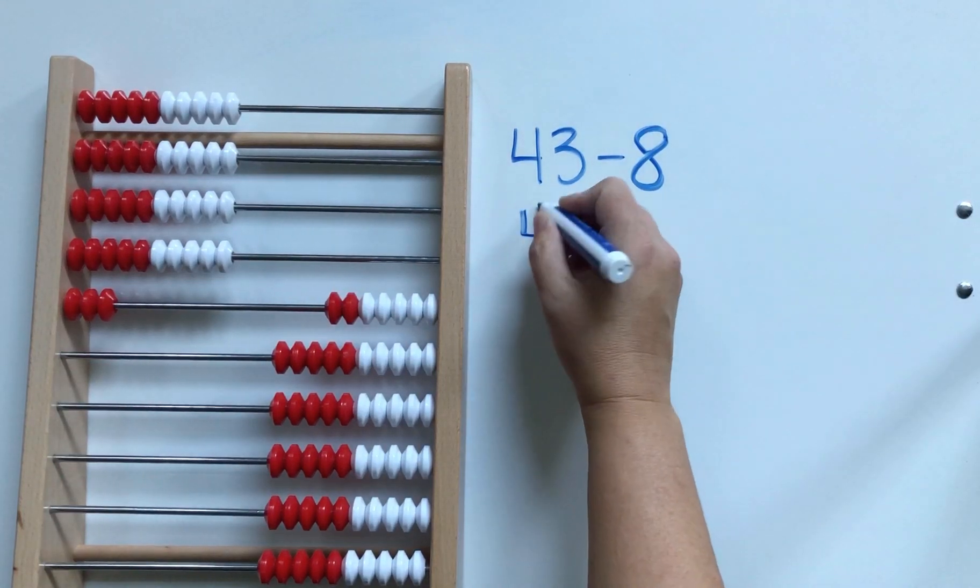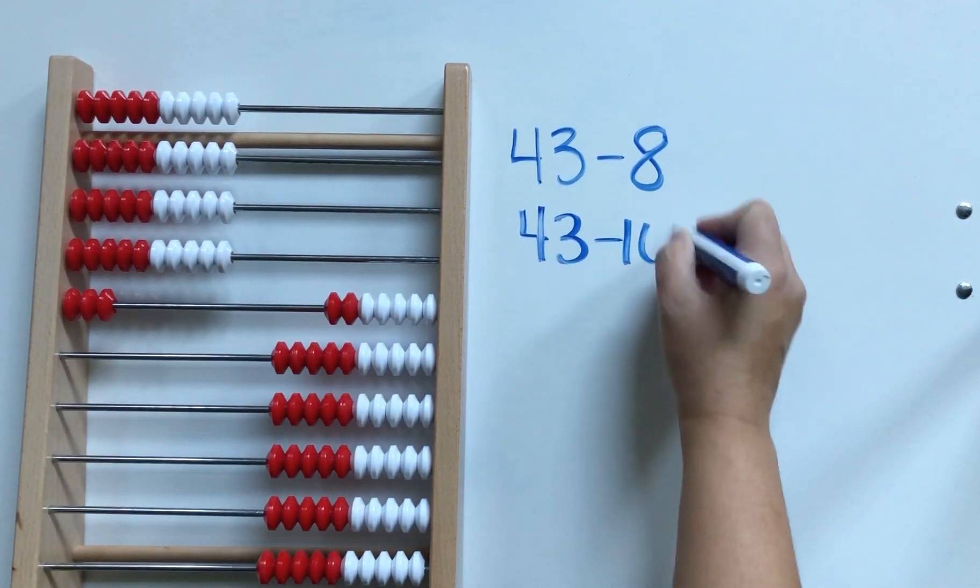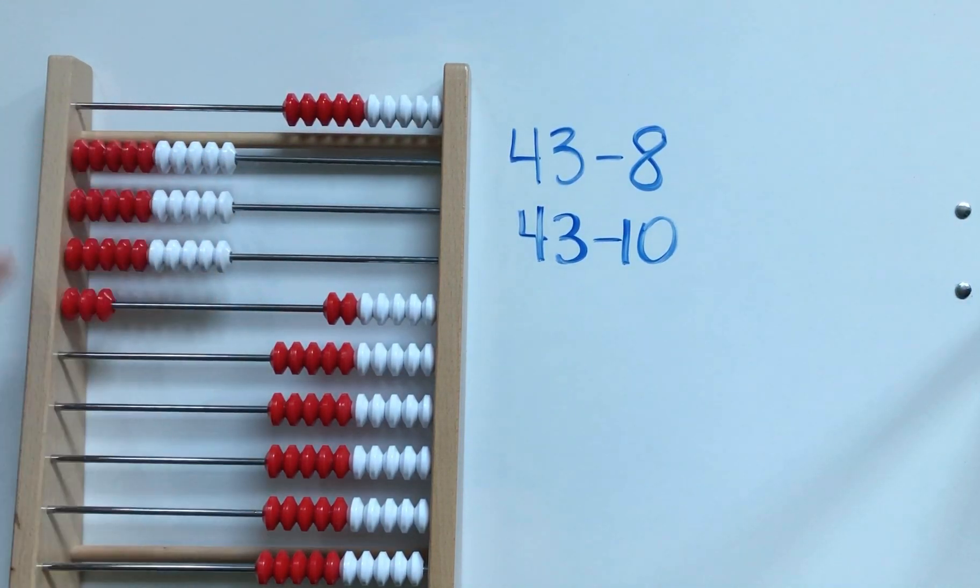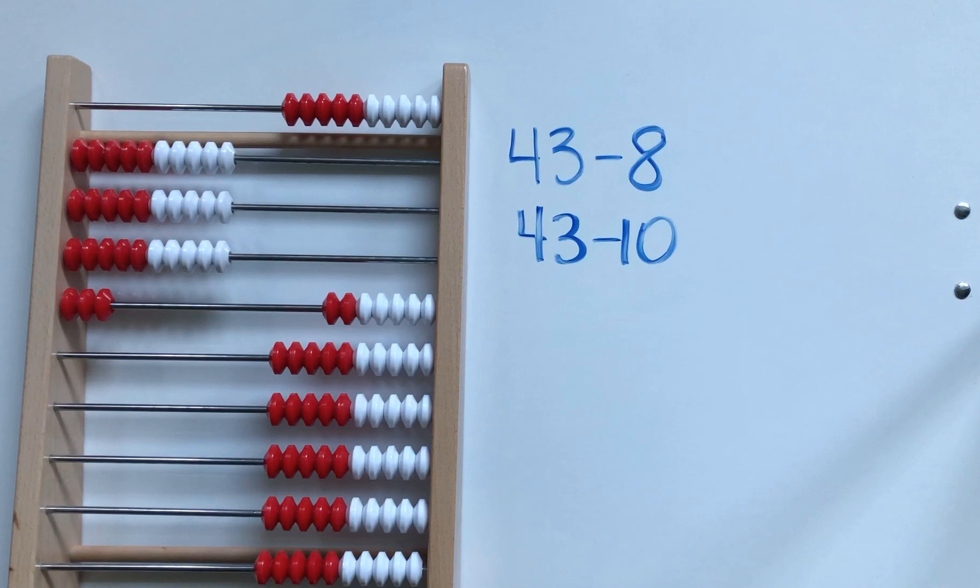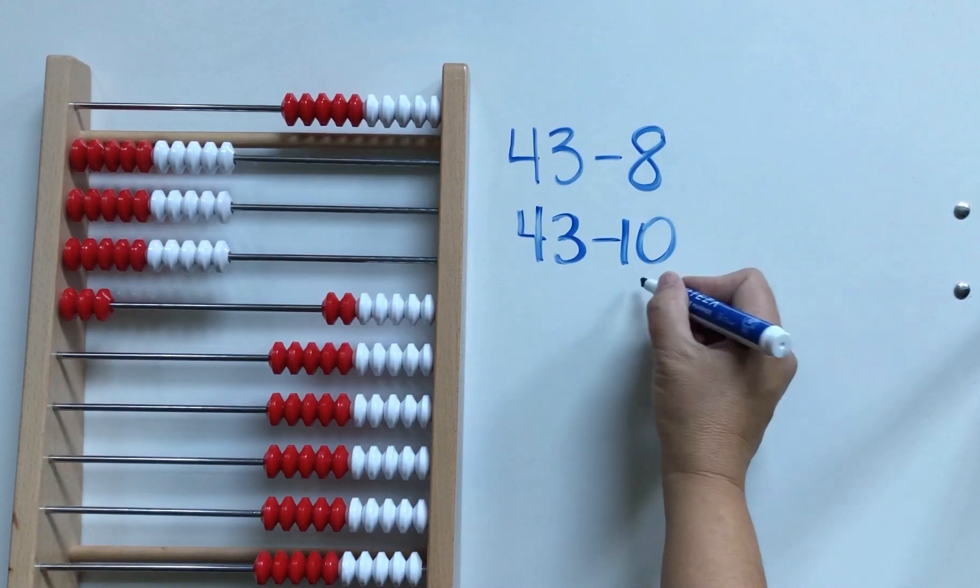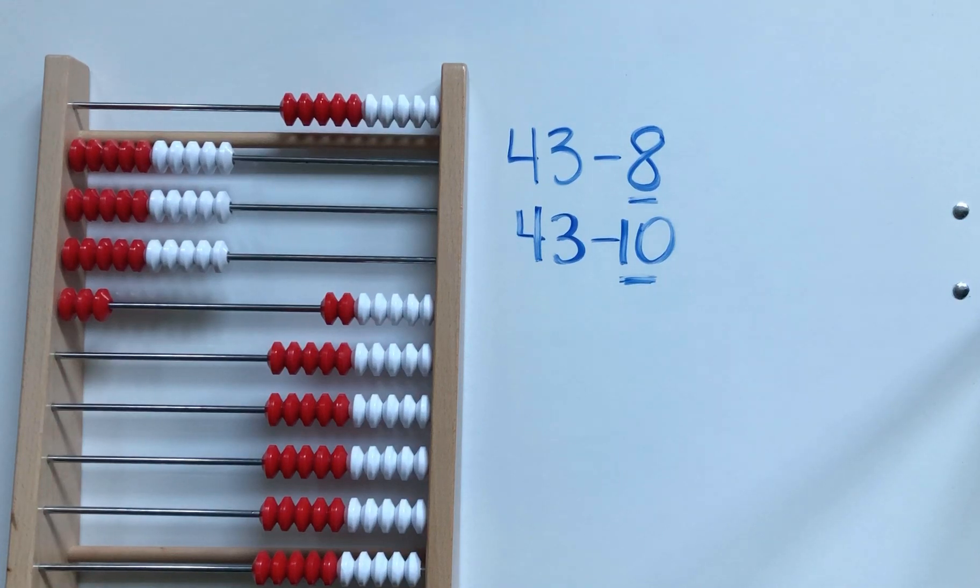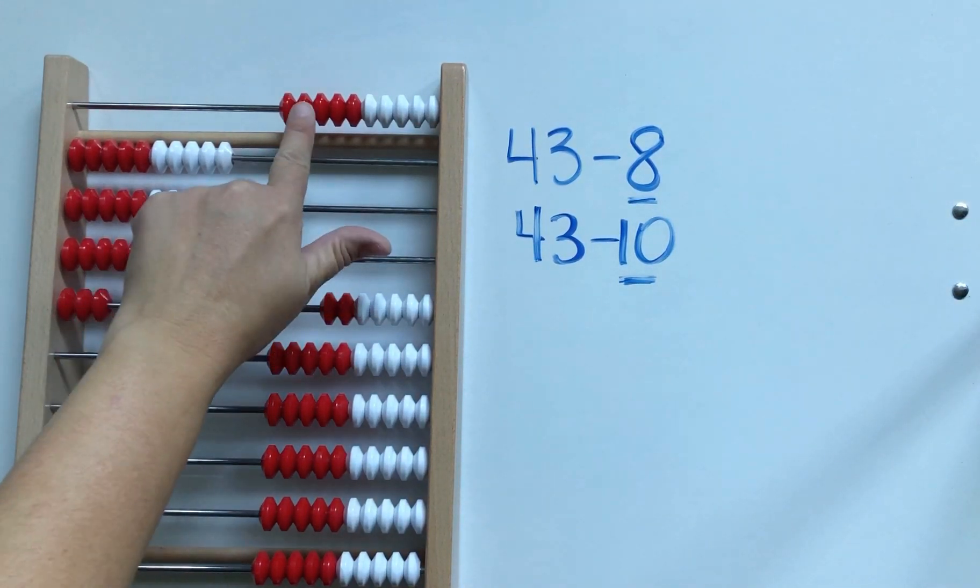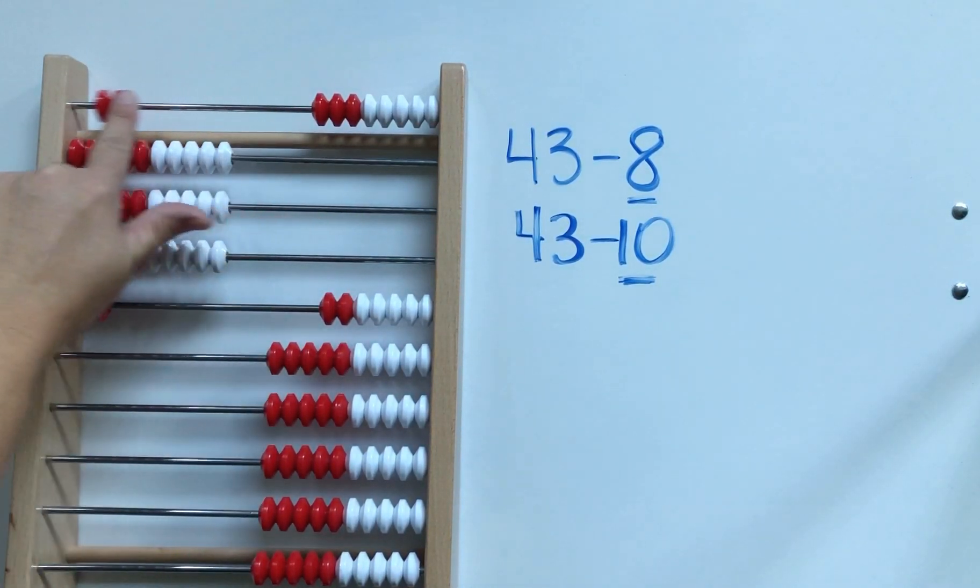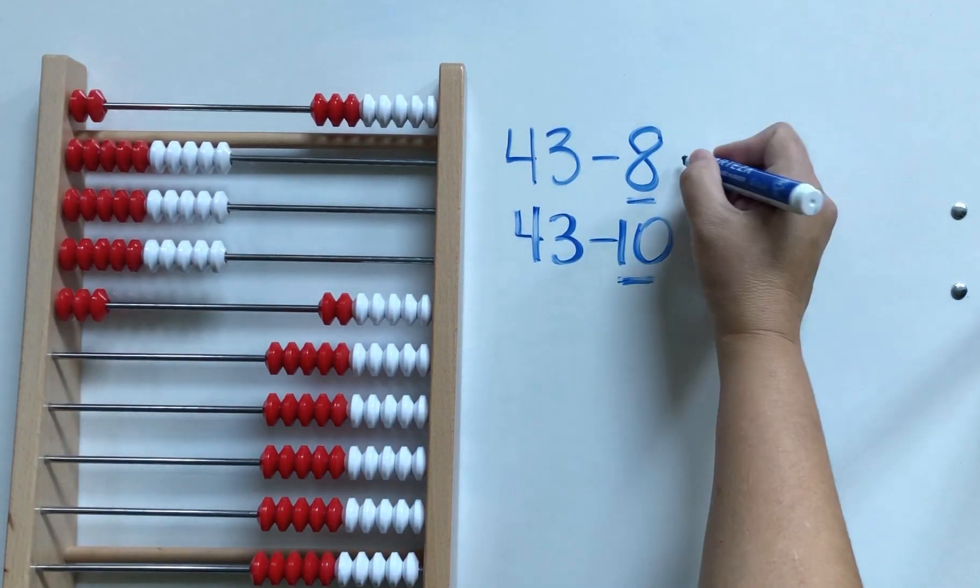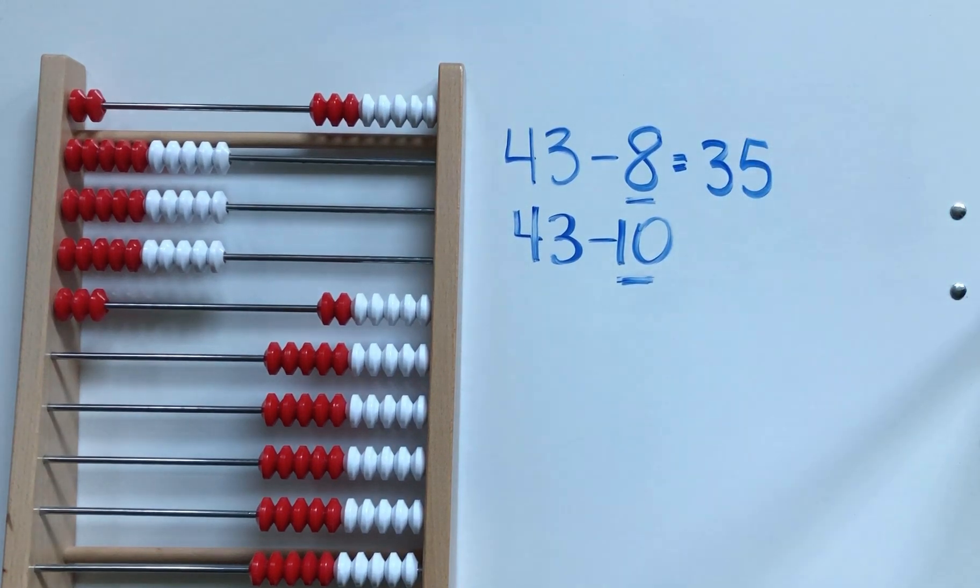Now what do we know about 8? We know that 8 is pretty close to 10, it's only 2 away from 10, so let's start by subtracting 10, which is easy to do in our heads. And we can see here on the rekenrek that 43 subtract 10 is 33. However, we were only supposed to take away 8 and we took away 10, so we took away 2 too many. So now we have to add those 2 back. We had 33 and when we add those 2 back we get 35.